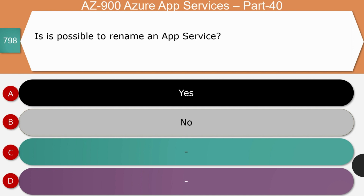Next question — is it possible to rename an App Service? The right answer is no. You cannot rename an App Service. If you want to rename it, you have to delete your resource and create a new one with the name you want.